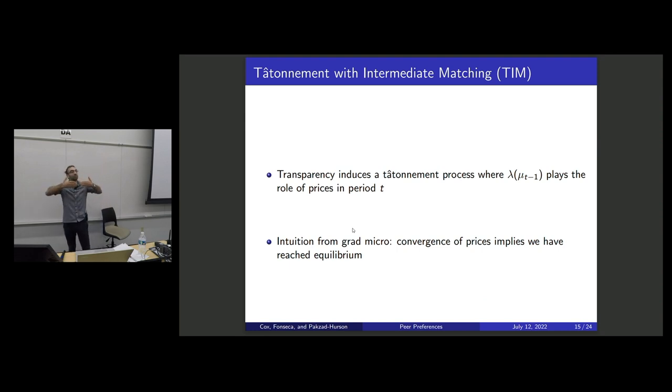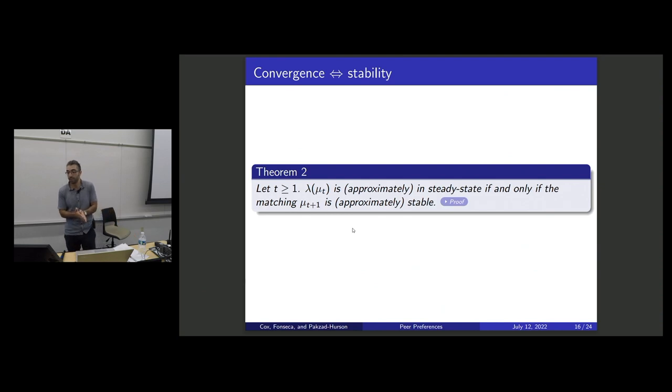And so notice that this induces a tatonnement process. Whatever the student body looked like last year, that's going to play the role of prices. I'm going to best respond to that. And our intuition from grad micro, if we see that these prices are converging, that's the same in an exchange economy, that's something like reaching equilibrium.